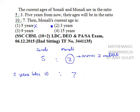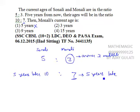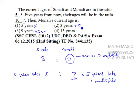पांच साल बाद जो Monali की age होगी वो 7 का multiple होगी — five years later 7 का multiple होगी। तो देखना किसमें पांच जोड़ोगे तो 7 का multiple आएगा। इसमें नहीं आएगा, इसमें भी नहीं आएगा।